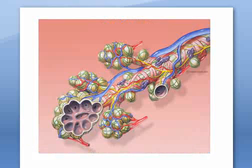The red blood vessels are pulmonary veins that collect oxygenated blood from the lungs to take it back to the heart.